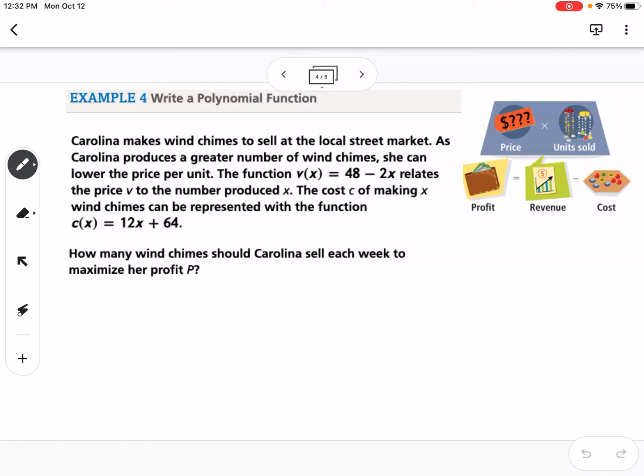And our last example here is an application problem. So it says Carolina makes wind chimes to sell at the local street market. As Carolina produces a greater number of wind chimes, she can lower the price per unit. The function V of X equals 48 minus 2X relates to the price V to the number produced X. The cost of making X wind chimes can be represented by the function C of X equals 12X plus 64. How many wind chimes should Carolina sell each week to maximize her profit? So we can see here profit is equal to revenue minus cost. So we have the cost equation, so that one's good, but then this up here is the price. So we also have to use this function right here where it says price times unit sold is going to give us the revenue.